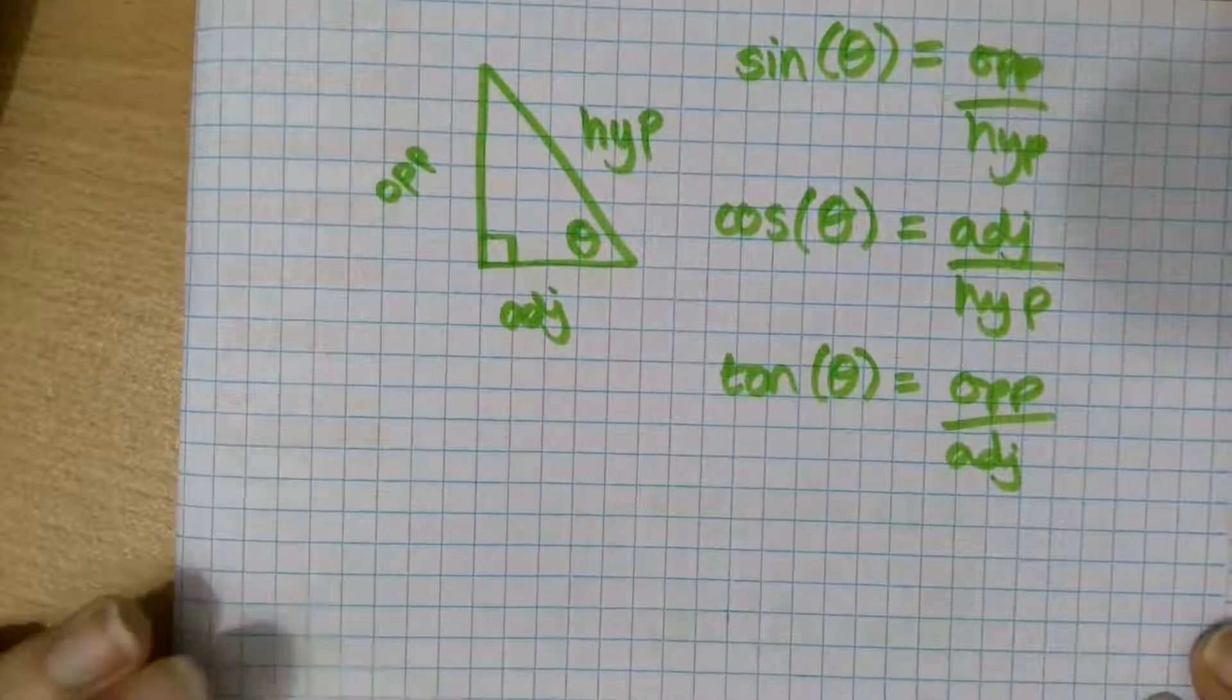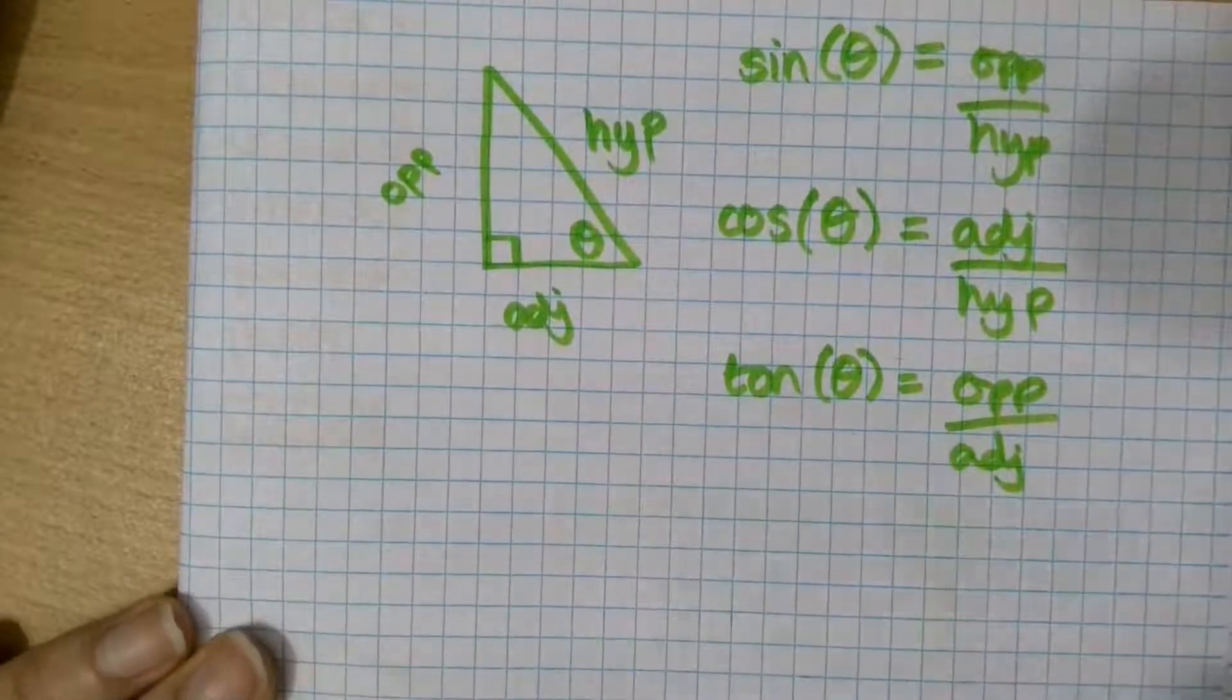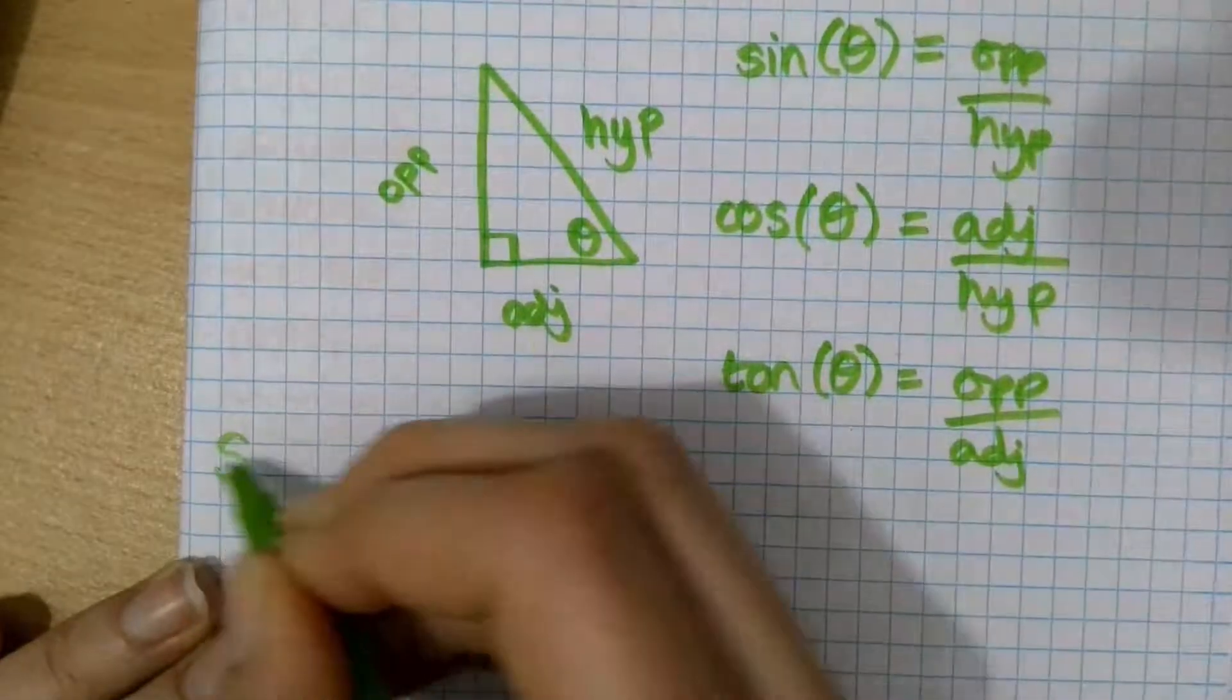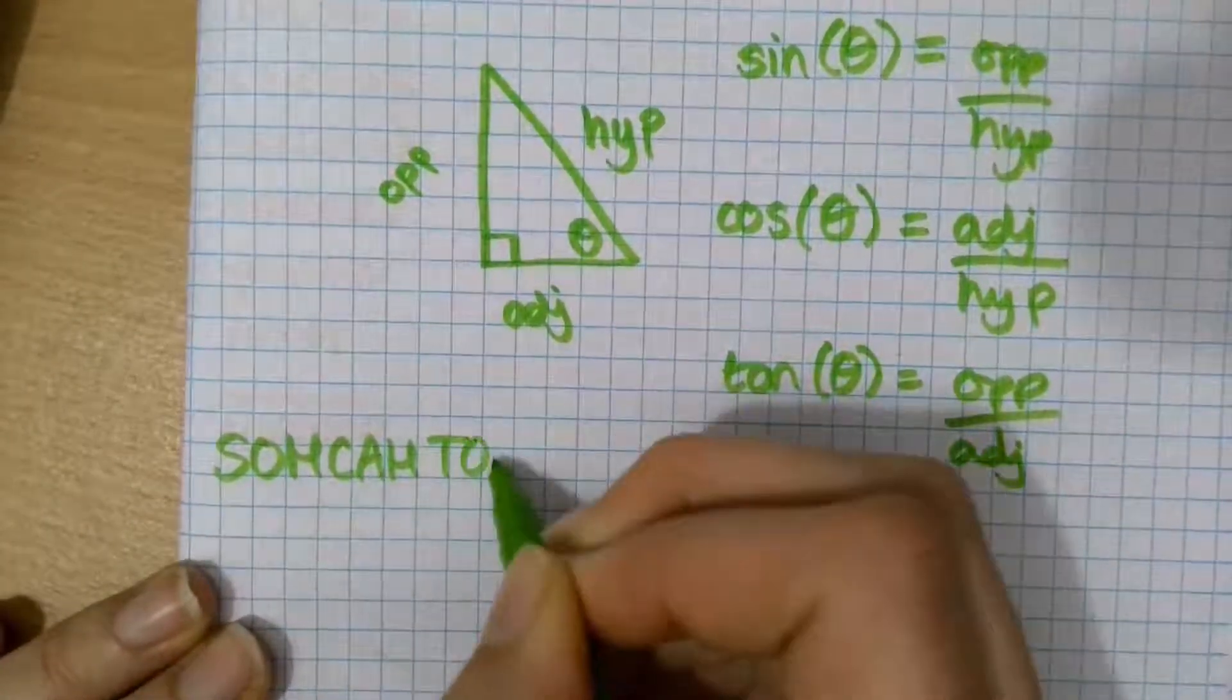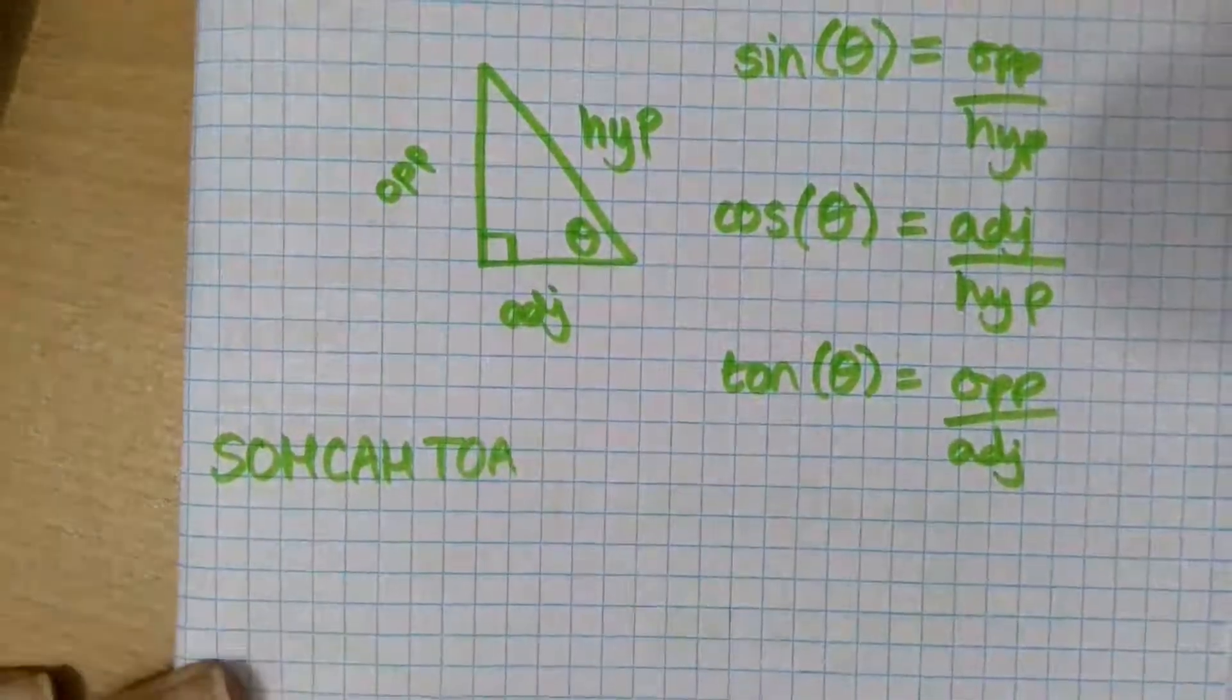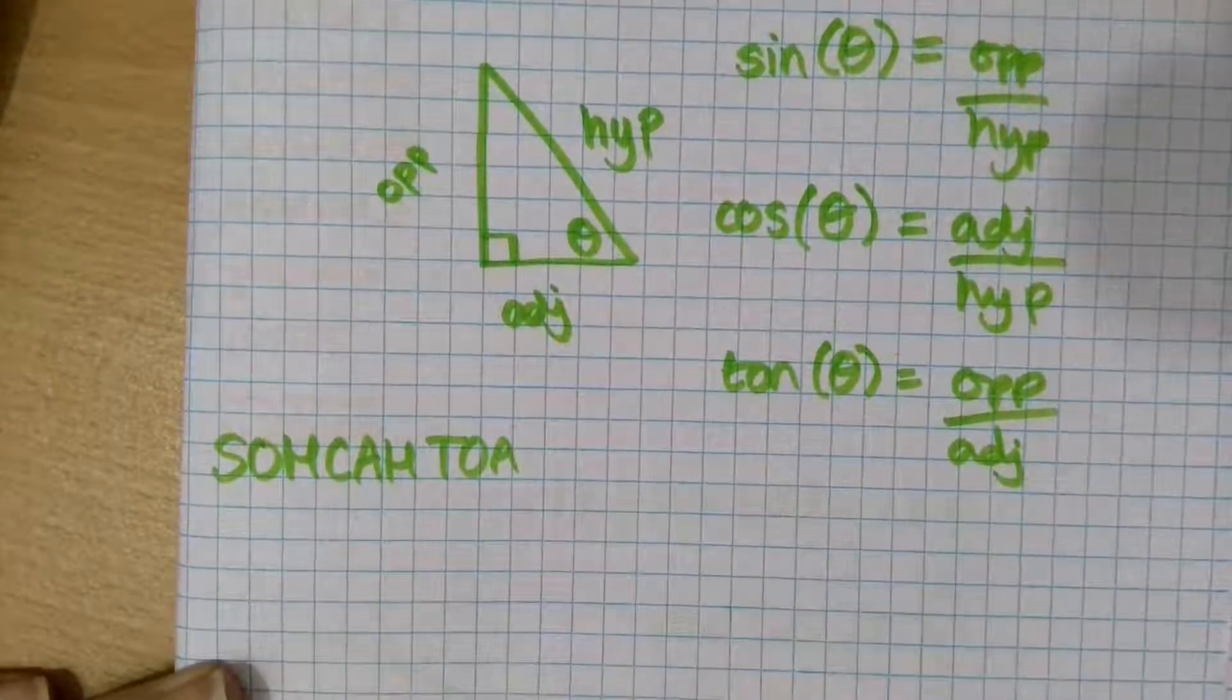You can either remember them as formulas, you can remember them as formula triangles, or you can do what I do, which is use the mnemonic Sokotoa. Any of those three ways will be fine, but this is the way I'm going to be using throughout my examples.